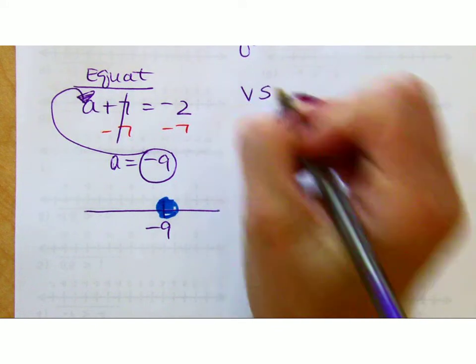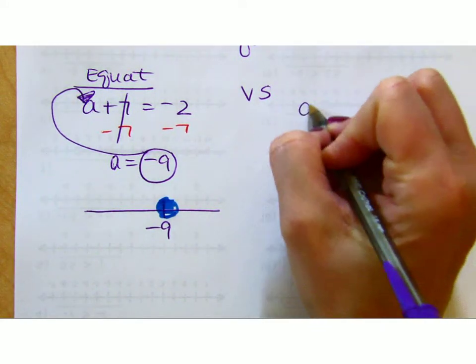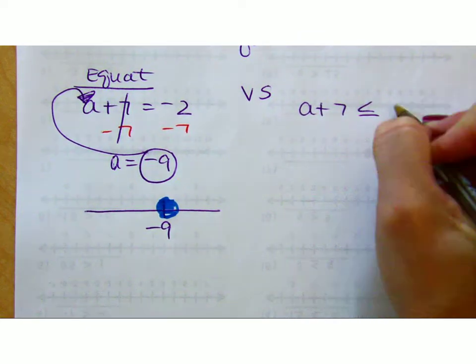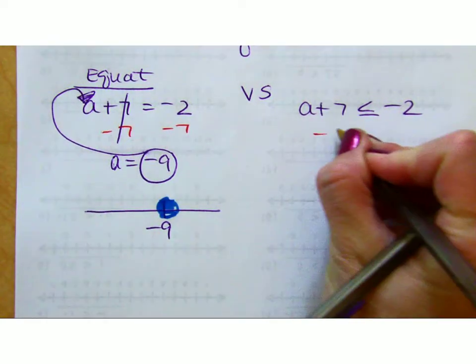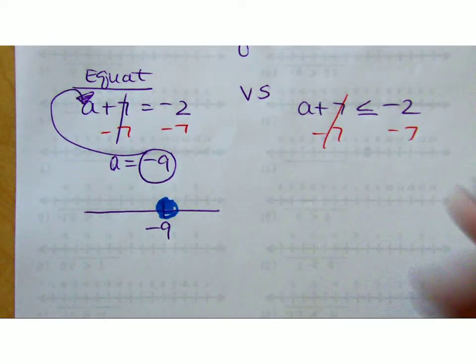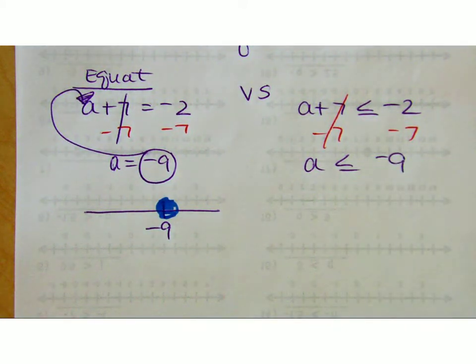Versus solving a one-step inequality. If I just took that a plus 7 and made it less than or equal to negative 2, the good news is the process and how you solve it is the same. The only difference is your solution set is going to look pretty different. So I'm still going to show my work this way. I'm still going to get that negative 9, except instead of it needing to equal negative 9, it can be negative 9 or anything less than that.